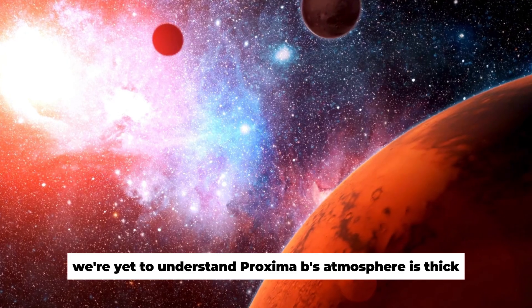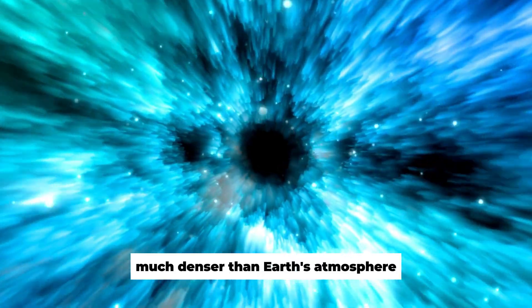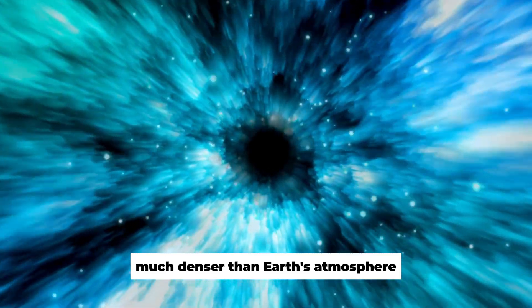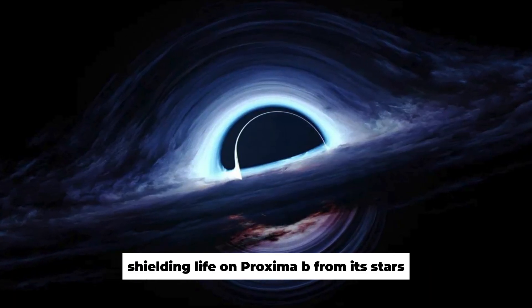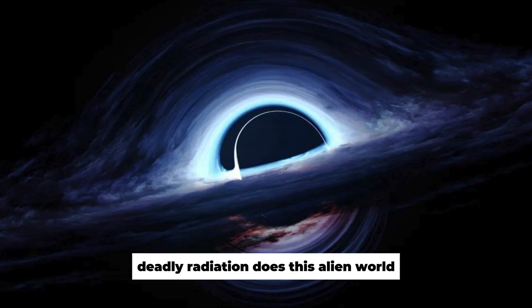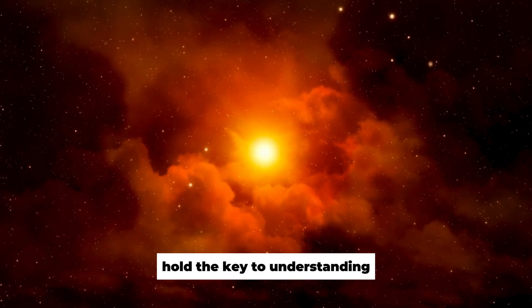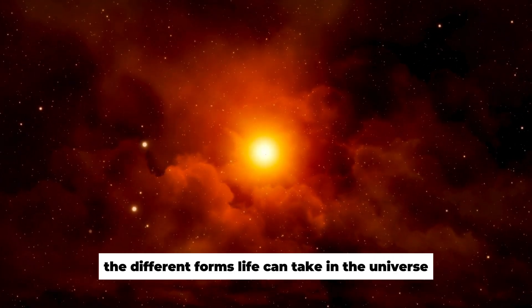Proxima B's atmosphere is thick with suspended particles, much denser than Earth's atmosphere. Is this dense atmosphere shielding life on Proxima B from its star's deadly radiation? Does this alien world hold the key to understanding the different forms life can take in the universe?